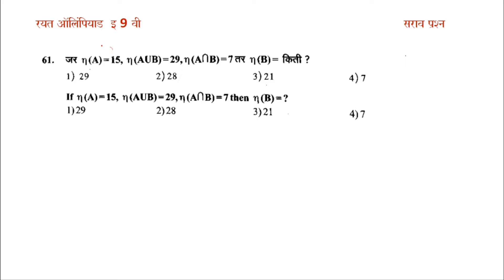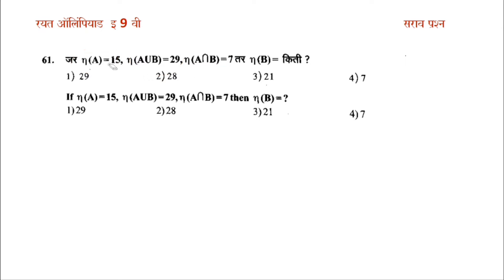N of A means A is 15, A union B is 25. So N of B means B is 15.